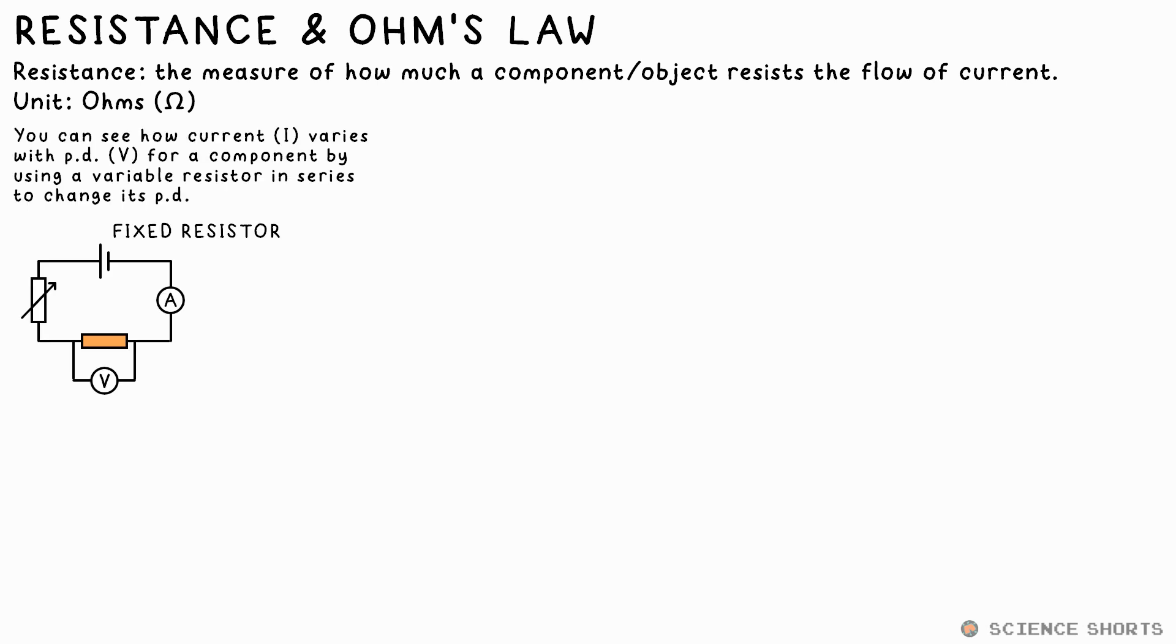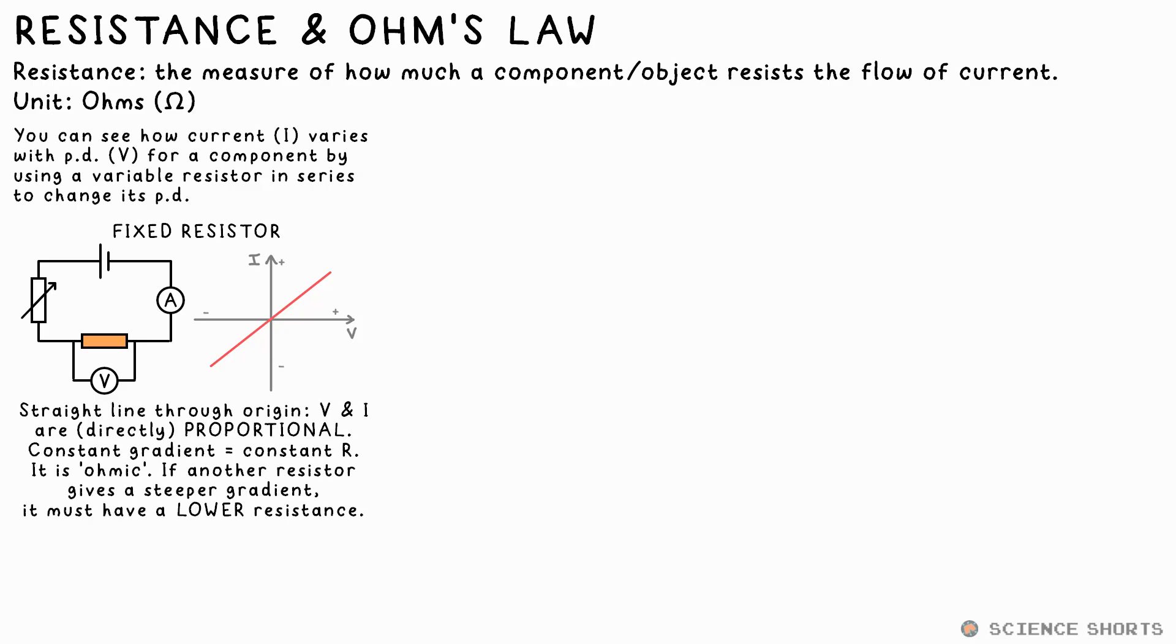If you make a circuit with a resistor and change the PD available to it, what we find is that an increasing PD results in a greater current flowing. In fact, doubling one doubles the other, so we can say the PD and current, or V and I, are directly proportional. Drawing a graph of these two makes a straight line through the origin. And if we turn the battery round, we can get negative values for both too. That's still a straight line.